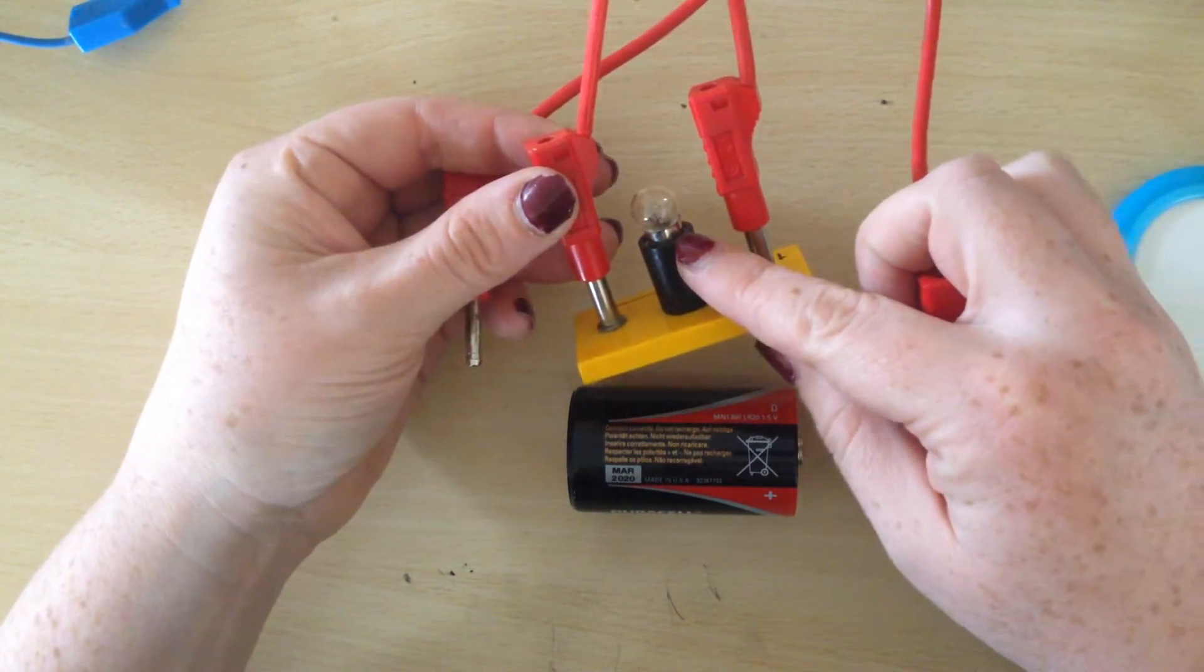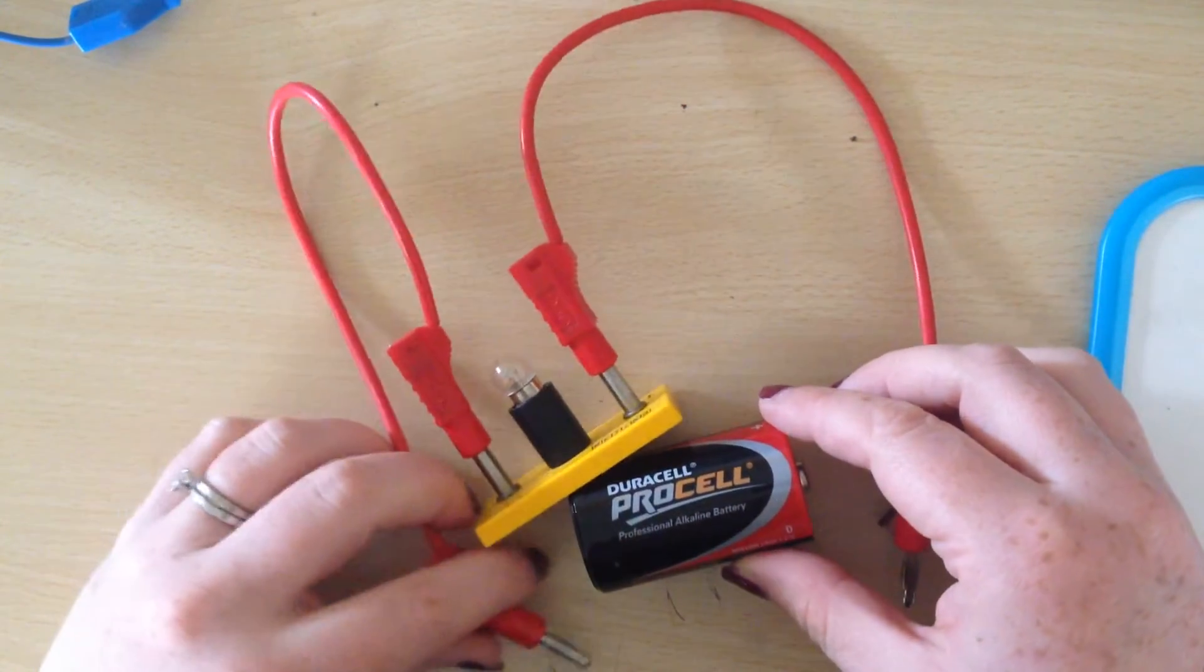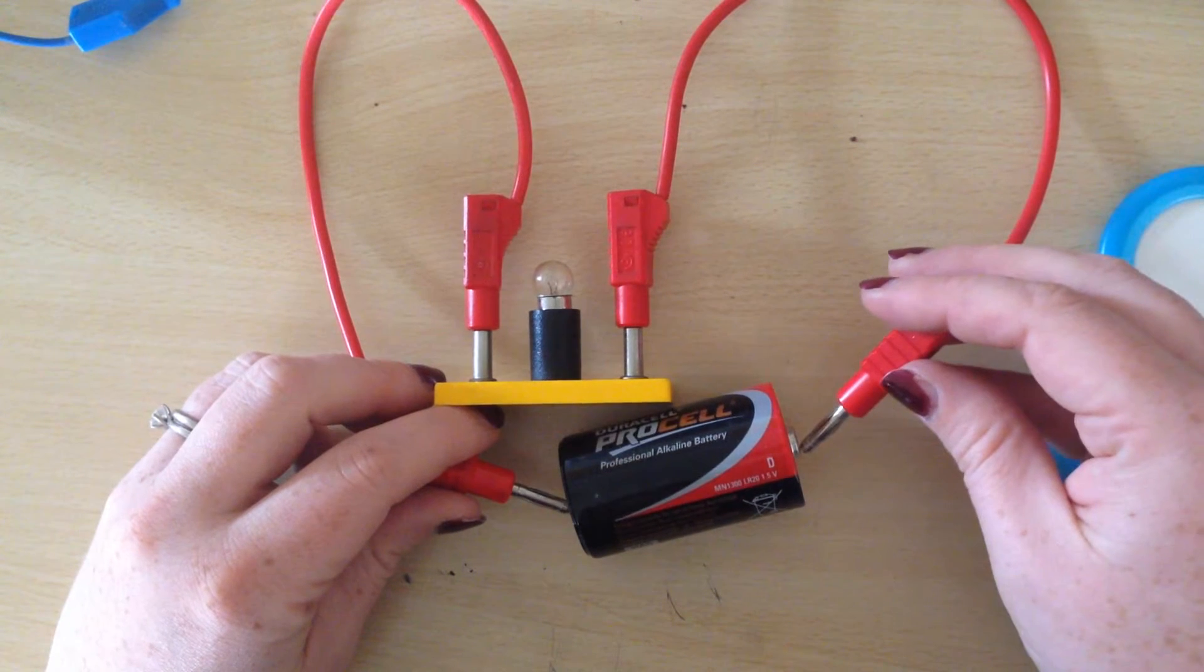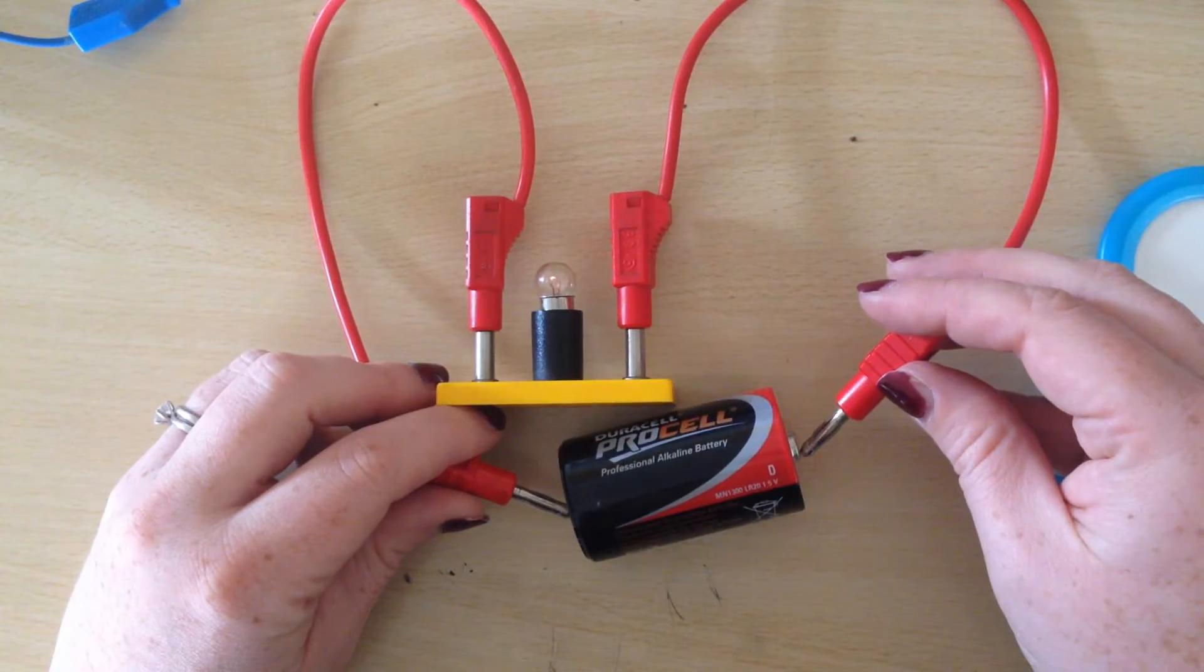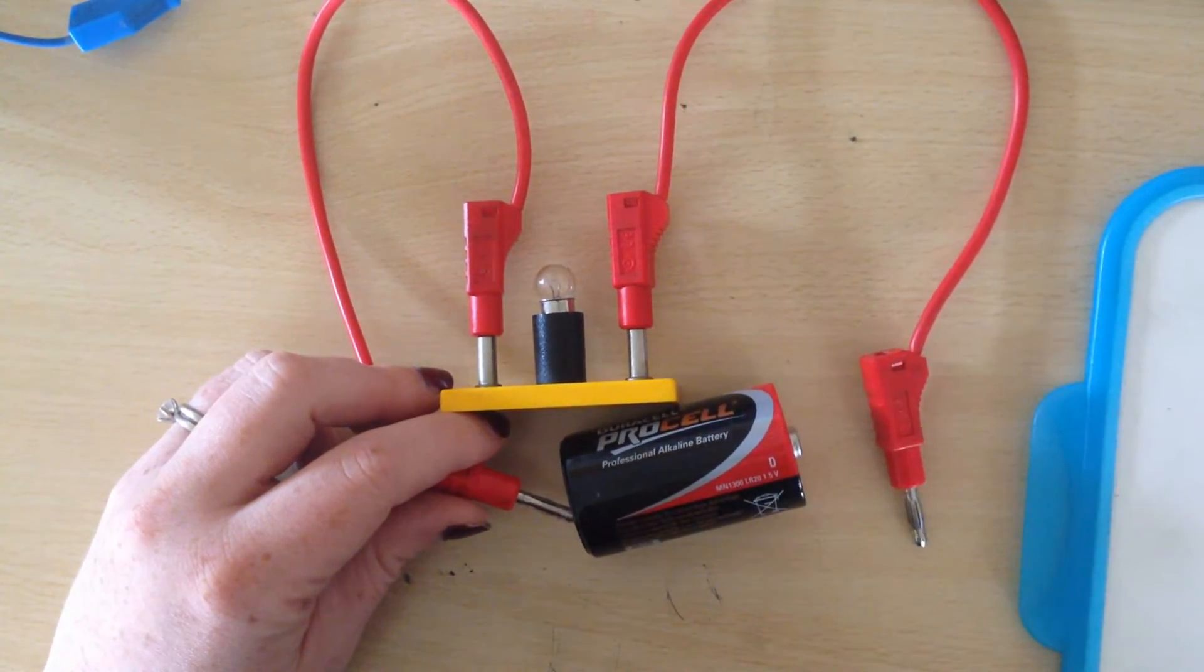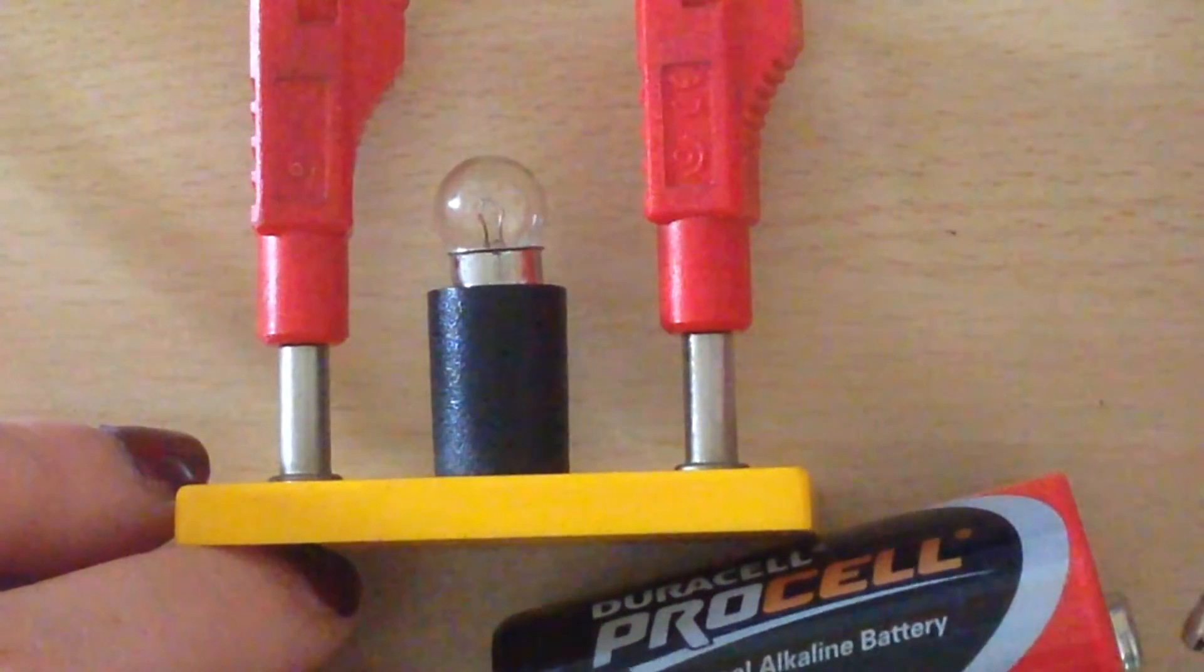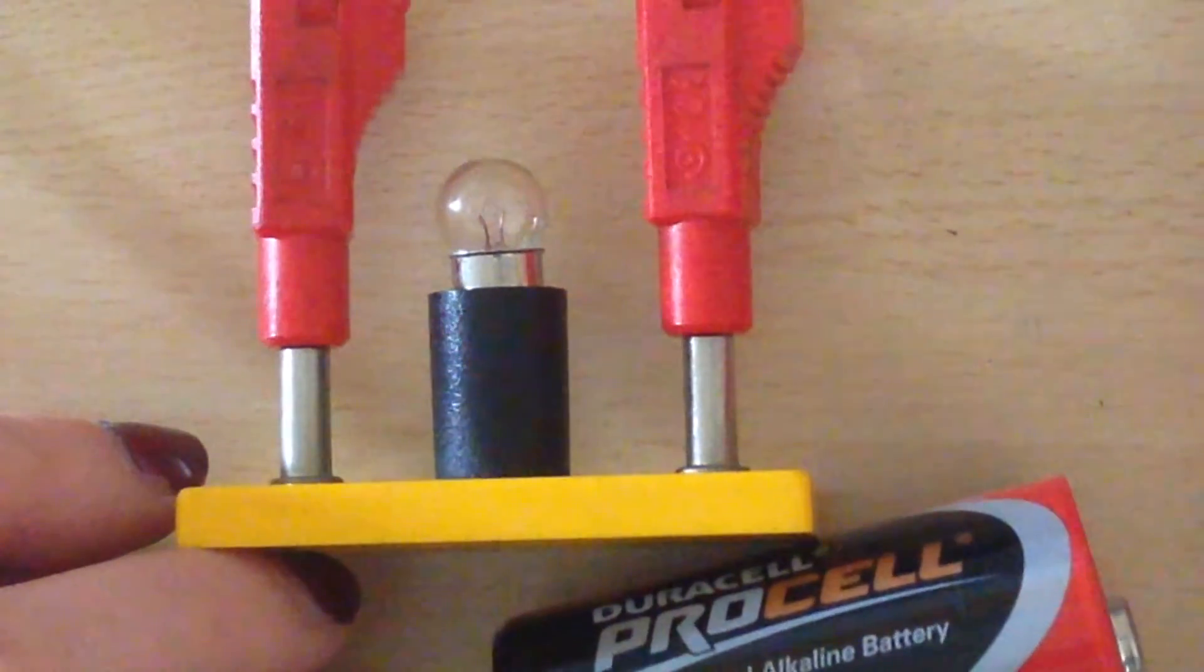So here I have a bulb attached to two wires and this is my battery here. I'm just going to attach either end of the wires to the battery and hopefully you can see the bulb lighting up. I'll just zoom in on that a little bit for you and do it again. So when I complete the circuit you can see the bulb lighting up.